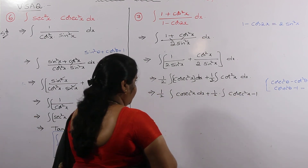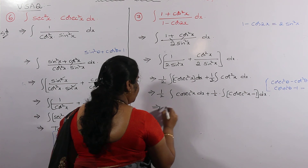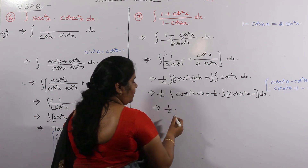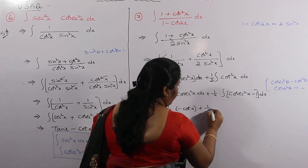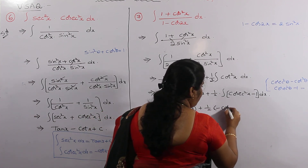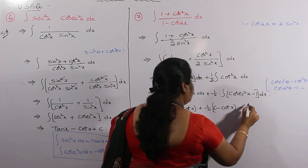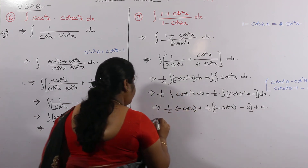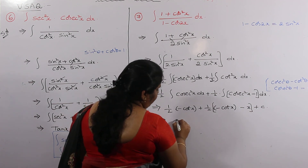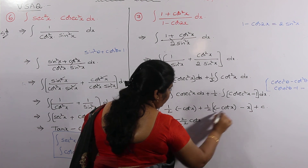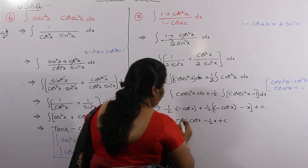Applying the integration: 1 over 2 times integral of cosecant squared x dx gives minus cot x. Plus 1 over 2 times integral of (cosecant squared x minus 1) dx, which gives minus cot x minus x. Combining: minus 1 over 2 cot x minus 1 over 2 cot x minus 1 over 2 times x, simplifying to minus cot x minus x over 2 plus C.